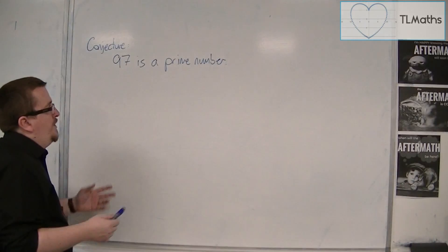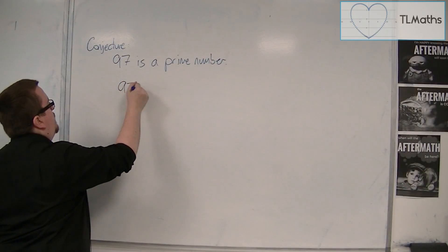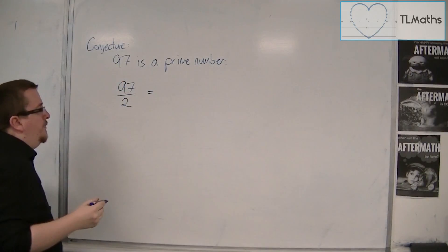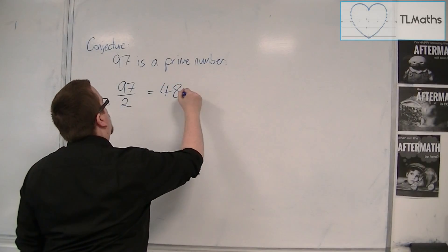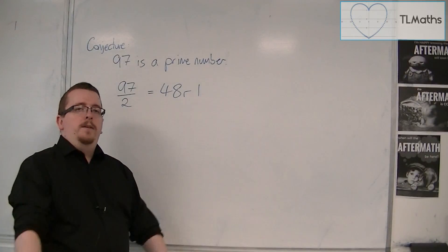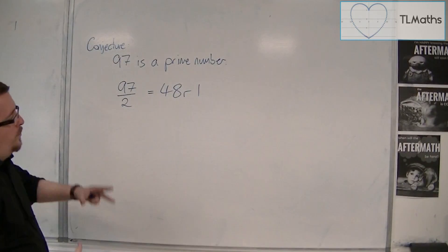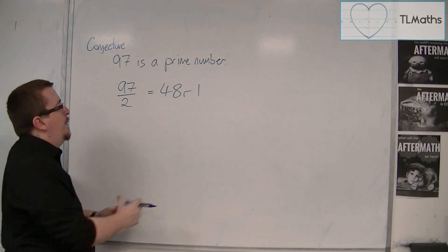So we'd start with 97 divided by 2. We'd divide it by 2 first. Well, 97 divided by 2 is 48 remainder 1. I'm not going to go into decimals. I'm going to go back to primary school using a remainder, because I just need to show that it doesn't go in exactly.